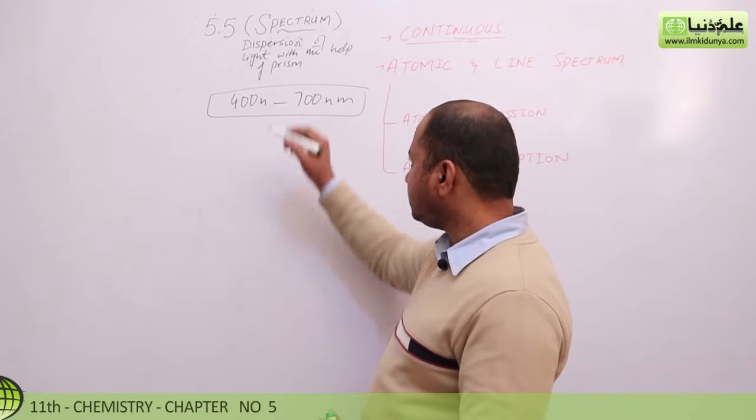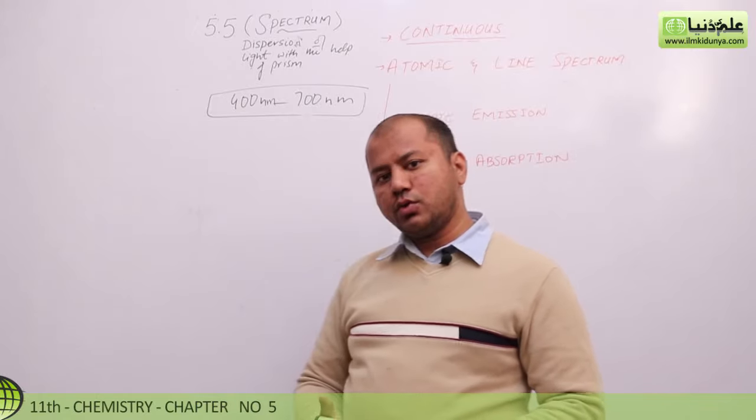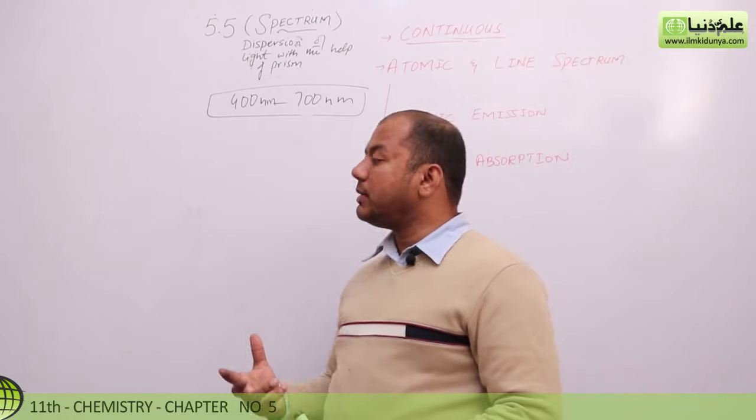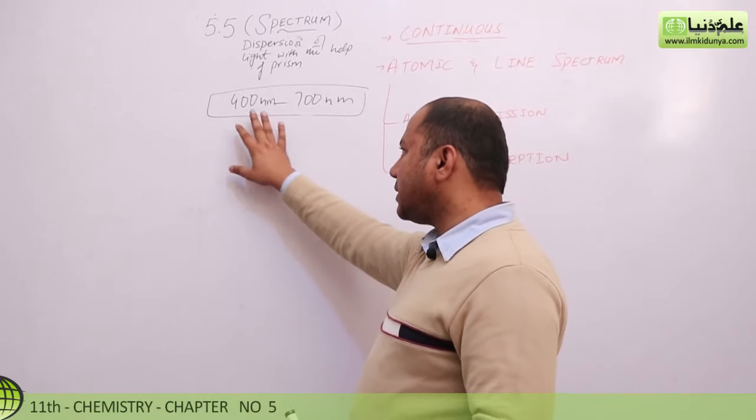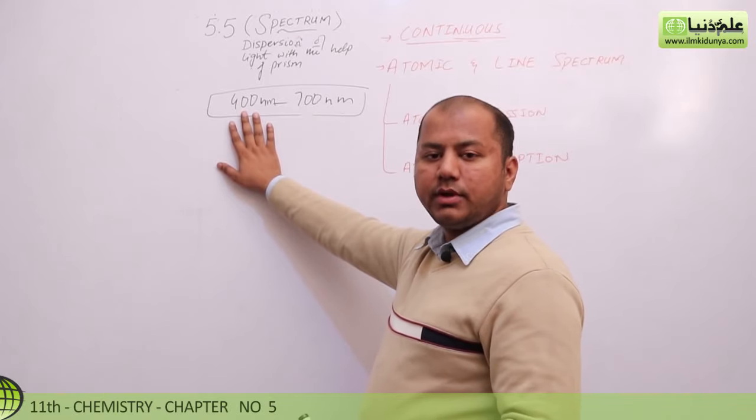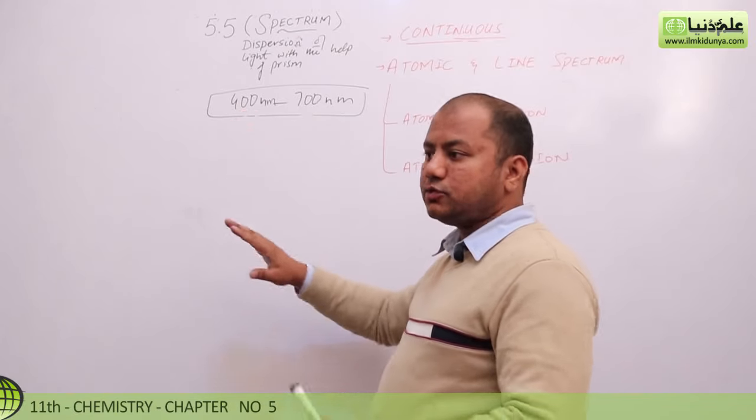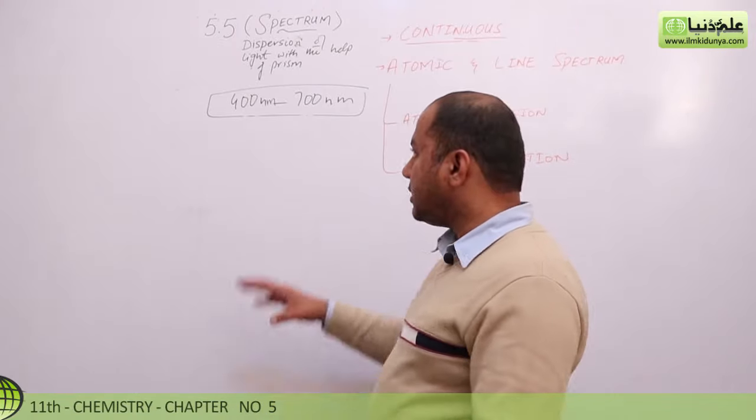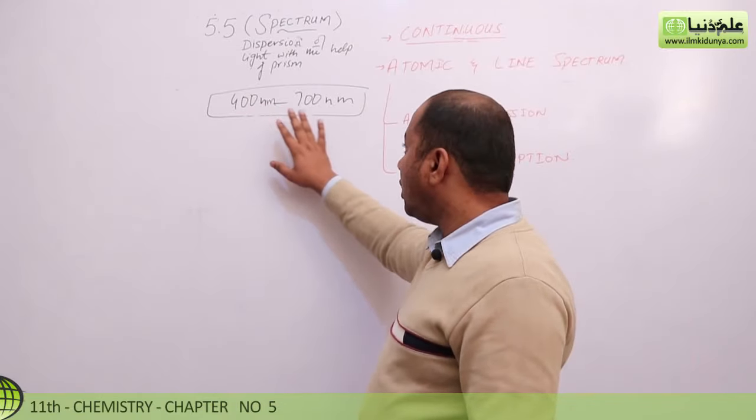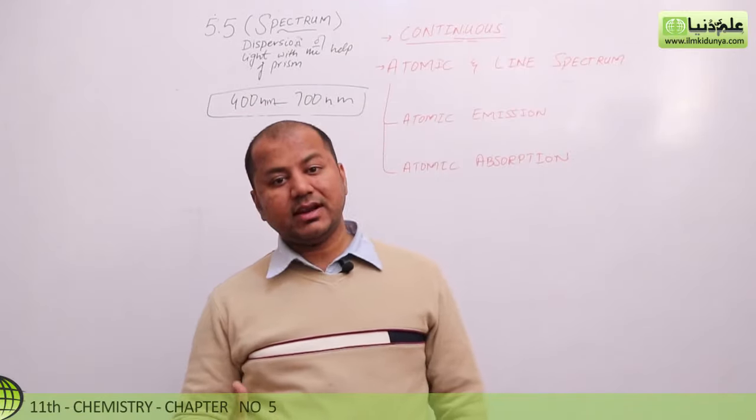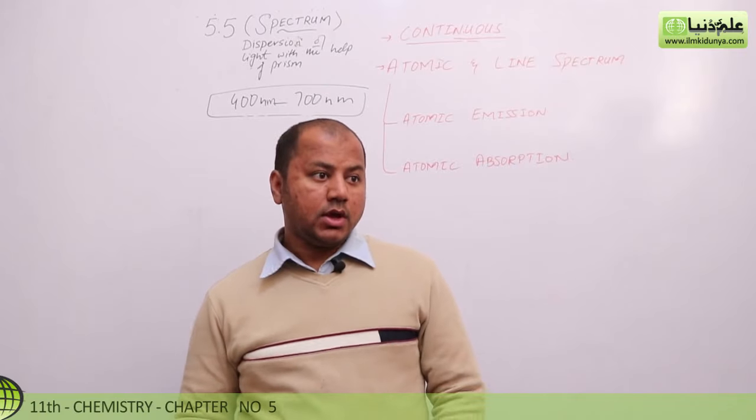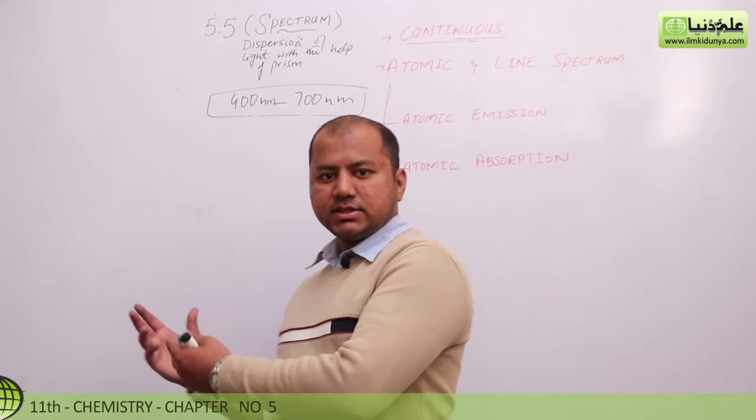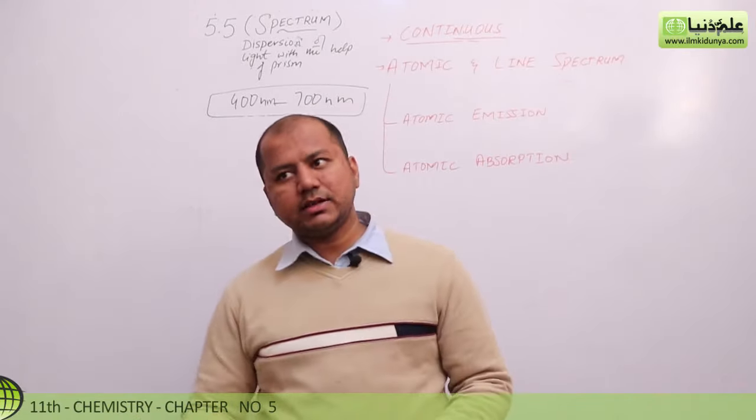You can see here on the board, I've written 400 nanometers and 700 nanometers. These two quantities show that light with different colors ranges from 400 nanometers to 700 nanometers. Only these energy values of photons, from 400 nanometers to 700 nanometers, lie in visible light.